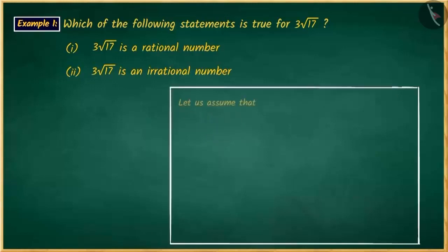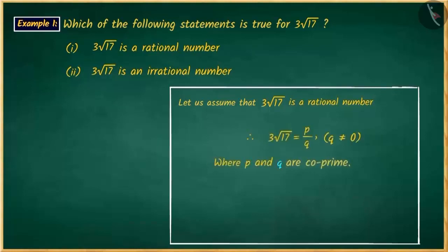Let us first assume that 3 square root 17 is a rational number. So, we will write it as p over q, where p and q are co-prime numbers, and p and q have no common factors other than 1.